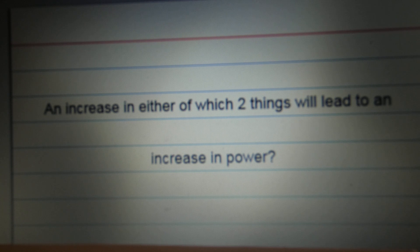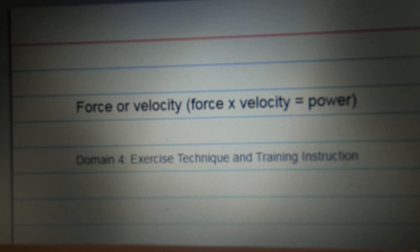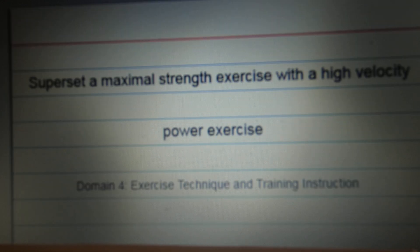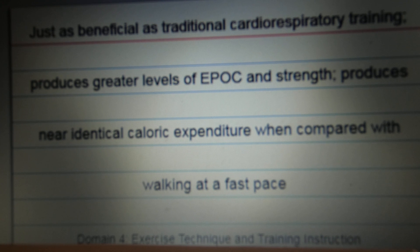An increase in either of which two things will lead to increase in power. Force or velocity. Force times velocity equals power. What type of resistance system does power training use? Superset. A maximal strength exercise with a high velocity power exercise. What three things has research demonstrated regarding circuit training? Just as beneficial as traditional cardiorespiratory training. Produces greater levels of EPOC and strength. Produces near identical caloric expenditure when compared to walking at a fast pace.